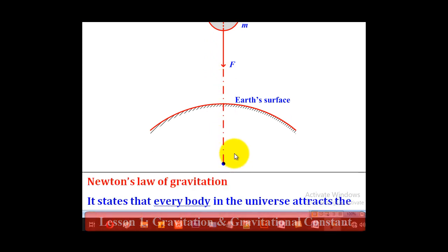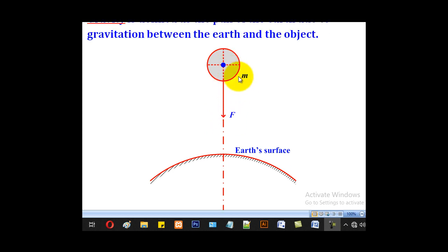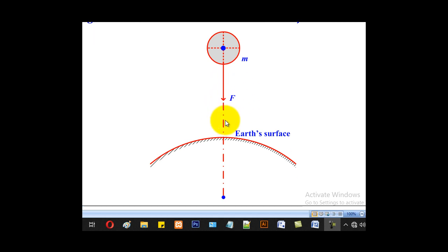Why vertically downwards? Because it is towards the center of the earth. And that force is known as the weight of the body. So if the body is of mass M, this force will be equal to Mg, where g is the acceleration due to gravity.